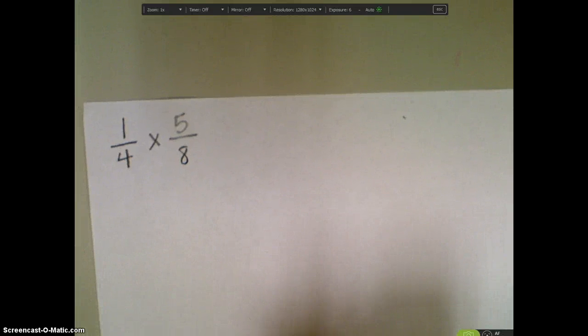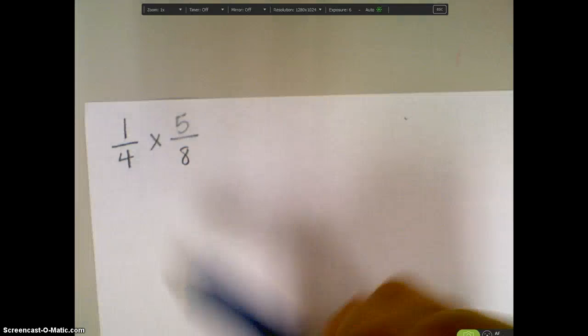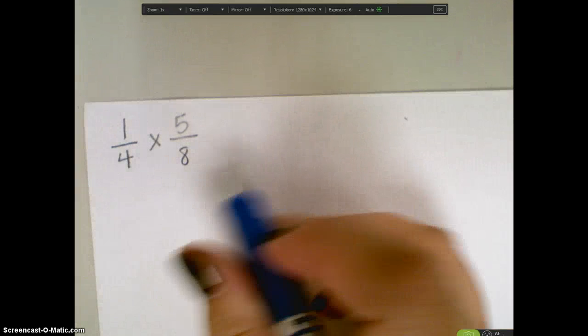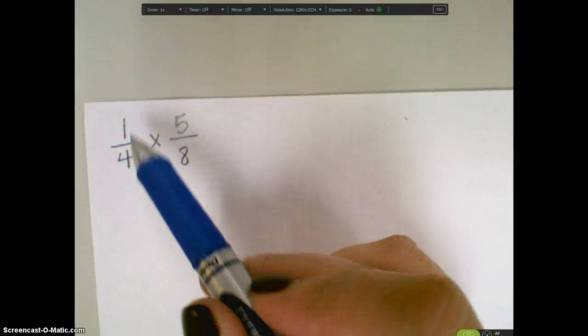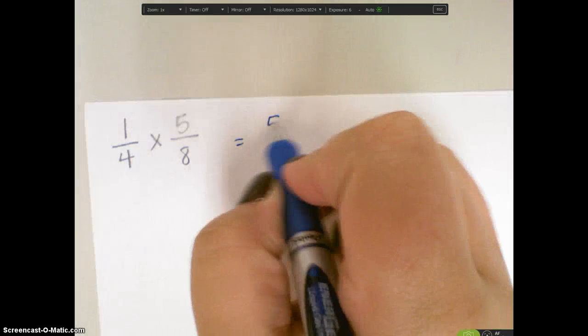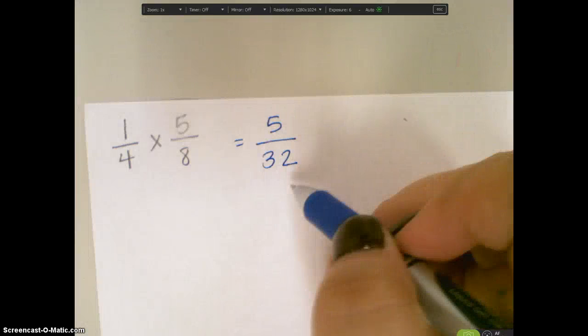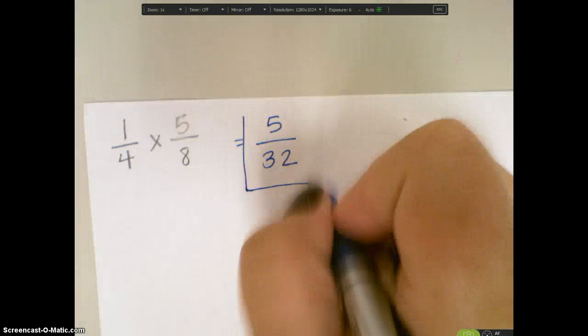This video is going to review how to multiply fractions. So when I have my fractions, the nice thing about it is I don't need a common denominator. I can just multiply straight across. So I'm going to do 1 times 5 is equal to 5, 4 times 8 is 32. And at this point I can't simplify any further, so this would be my final answer.